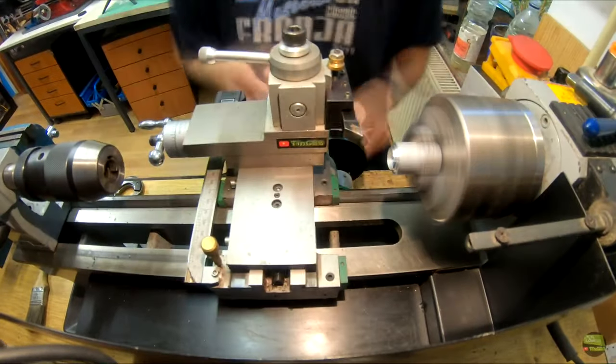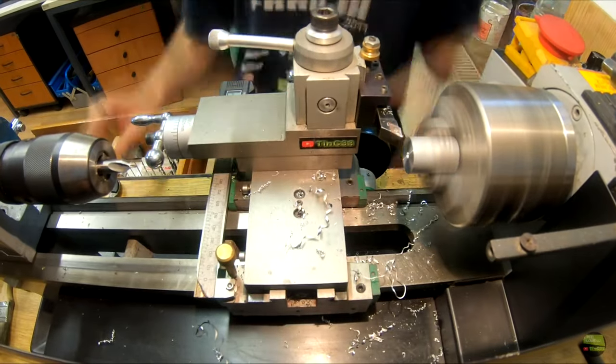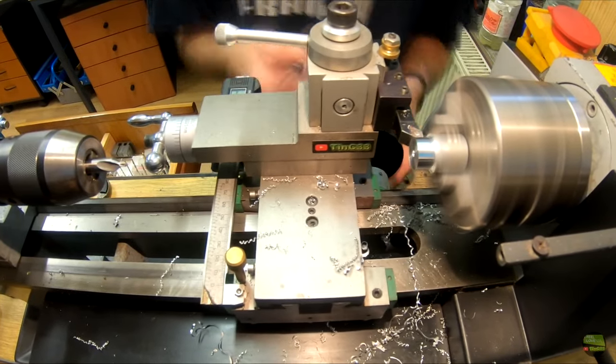Then I take a piece of aluminum, align it from the side and turn it to dimension 6.35mm for the thread, about 8mm long.